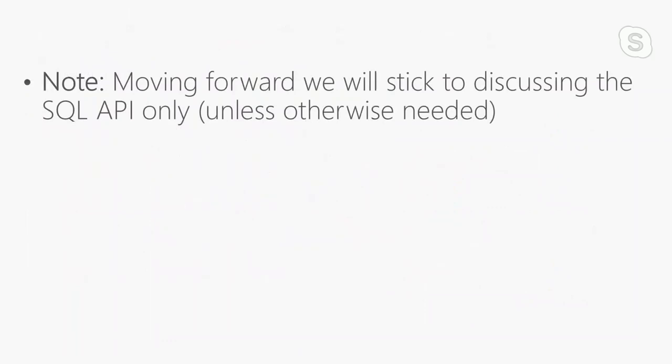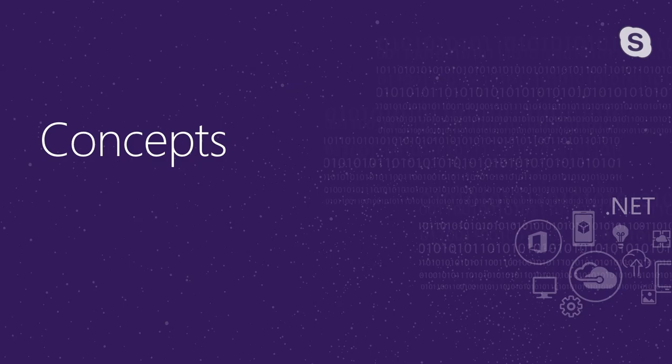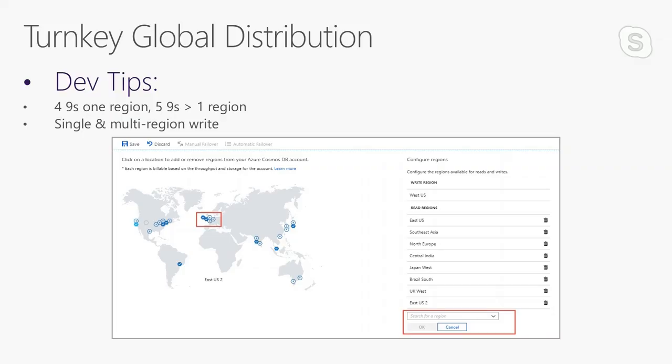From this point forward, I'll be sticking to the SQL API in Cosmos. Speaking of global distribution, Cosmos DB provides turnkey global distribution. You can easily spin up replicas by clicking on the map. If your Cosmos DB is hosted in only one region, you get four nines SLA — 99.99%. If you have greater than one region, you get five nines, which is obviously better.